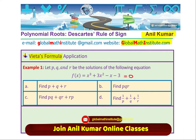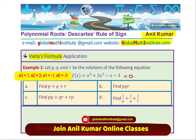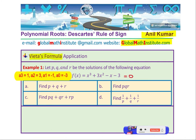Let us do them one by one. Part A: sum of the roots. In this case, A3 is 1, A2 is equal to 3, A1 is minus 1, and the constant A0 is minus 3. So what is the sum of the roots? The sum of the roots is negative A2 over A3, which is negative 3 divided by 1. So the sum of roots equals negative 3.